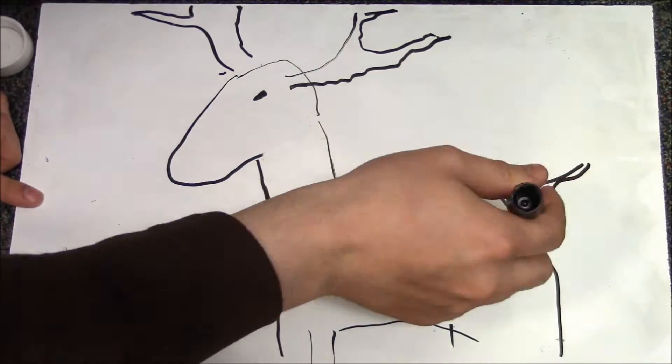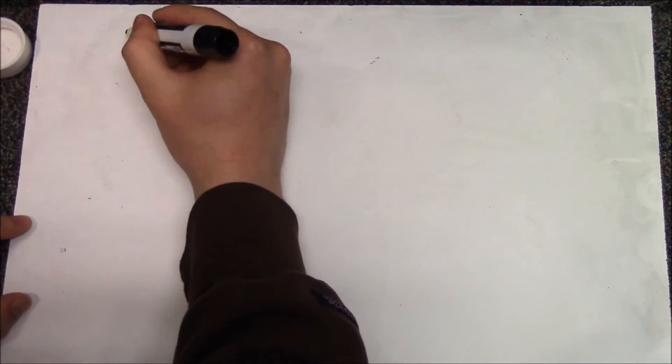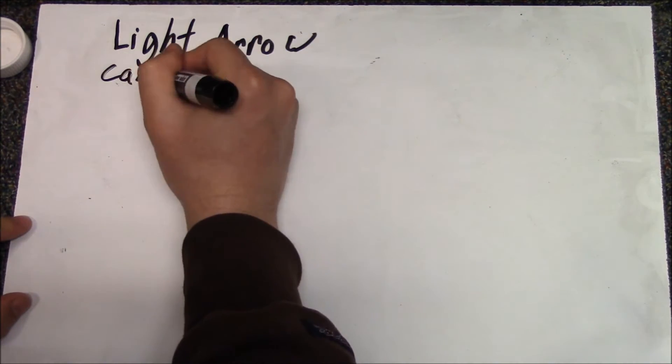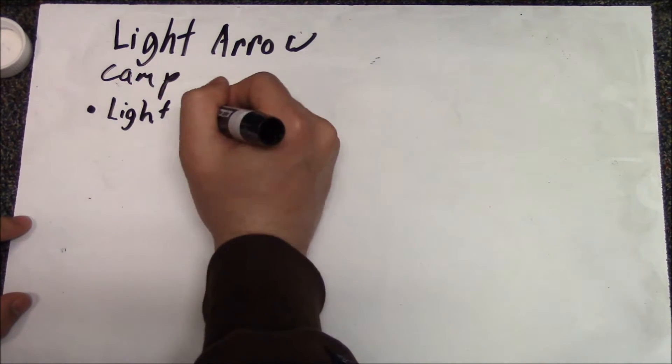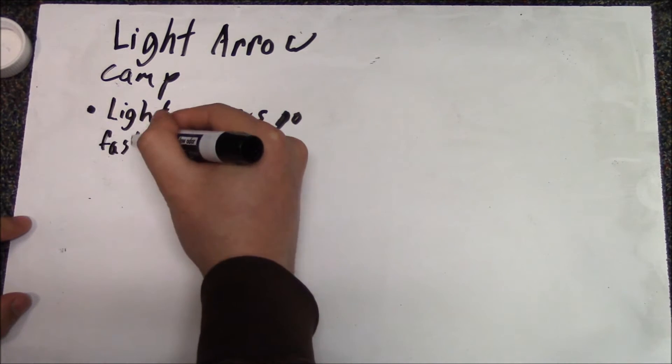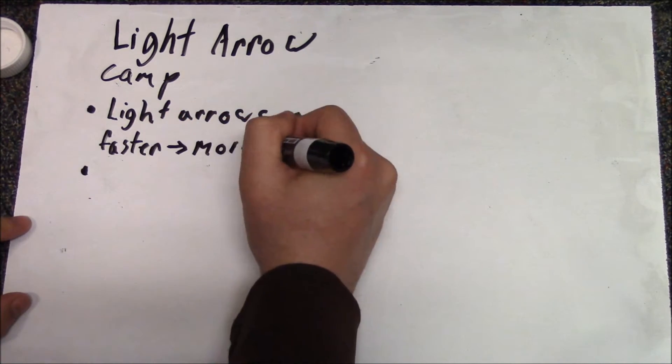This topic has a lot of misinformation going around about it, and it isn't much better on physics forums. I noticed a basic trend. The light arrows camp would often claim that light arrows had more energy because they were faster.